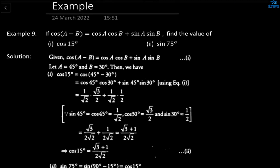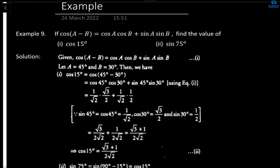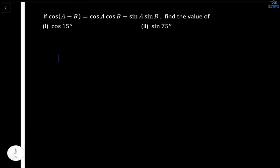The question gives us that cos(a minus b) equals cos a cos b plus sine a sine b. We have to find the value of cos 15 degree and sine 75 degree. For cos 15, we can write 15 as a minus b. We can't use 90 minus 75 because we don't know the exact value of cos 75 or sine 75. So we'll choose a as 45 degree and b as 30 degree, because we know the values of sine and cos for both 45 and 30 degrees.